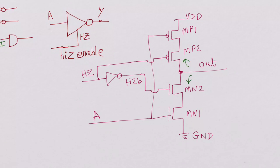Now let's look at the condition when high Z is zero. So this high Z bar is high. MP2 is on and MN2 is on. So the path to VDD and ground are on. It acts like a normal inverter depending on what is at the input A.